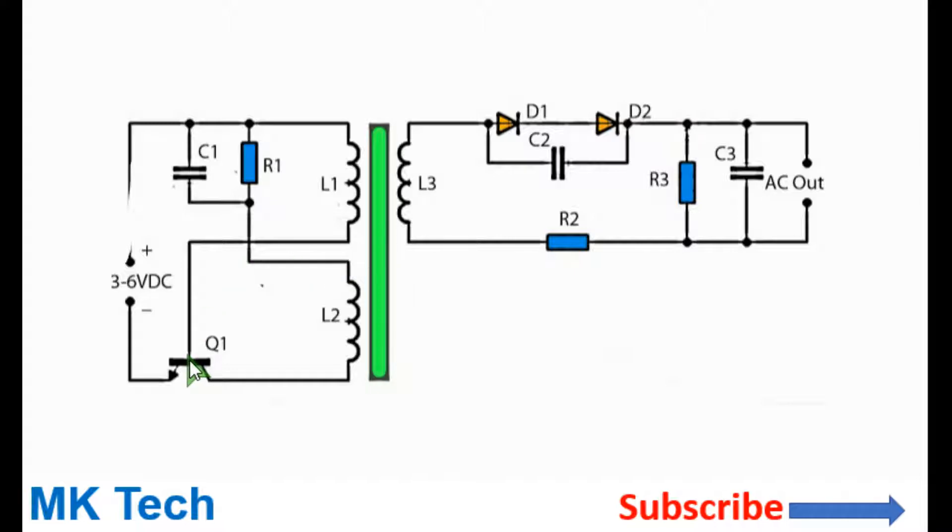Once the transistor is completely off due to the negative polarity induced voltage at its base, the process will begin again and the cycles will happen all over many times per second. It's a high frequency inverter which will operate at more than 20 kHz depending on the transformer parameters as well as the circuit parameters such as the inductances and the transistor you use.